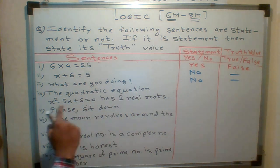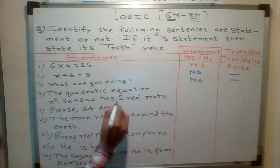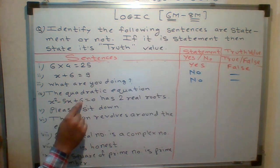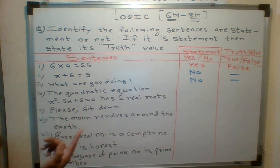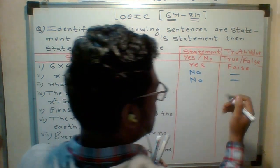The quadratic equation x square minus 5x plus 6 equals to 0 has 2 real roots. Can you find out these particular roots of this particular equation? If I factor it, 6 minus 3 and minus 2. So definitely x key value there are 2. So definitely has 2 real roots. Yes, it has. So it is true.